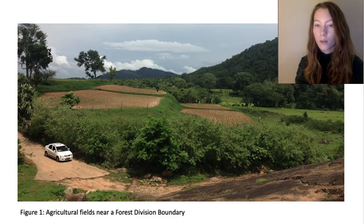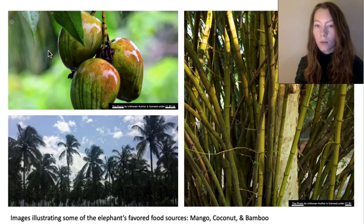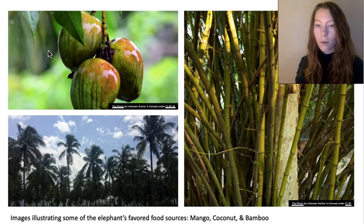It is a difficult situation, as people in this state want to develop the land to produce enough food, while the elephants need the food and water sources that existed in the undeveloped forest. Since there is now much less undeveloped land to serve as viable elephant habitat, elephants are exploring alternate food sources. A very desirable food source for the elephants are the cash crops grown by humans, including tender coconut, bamboo, banana, jackfruit, mango, and corn.